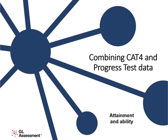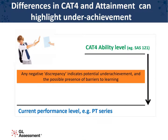If we link the CAT4 ability results back to the progress tests, thereby comparing ability with attainment, we can easily identify underachievement. Here we can see a student with an ability level of 121 and a progress test result of 100, showing that they're clearly underachieving according to their ability. If we found a student with ability in the top 10% and a performance in, say, maths of around the 50th percentile, this would encourage us to ask why they aren't performing to their ability. This is where the partnership of assessment comes in — the data asks the question, but the answer will need the professional knowledge of the teacher.